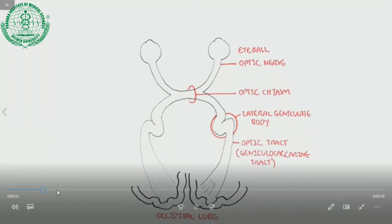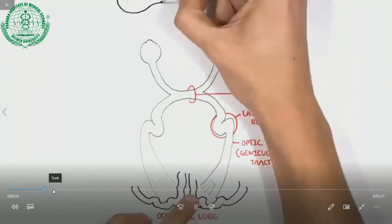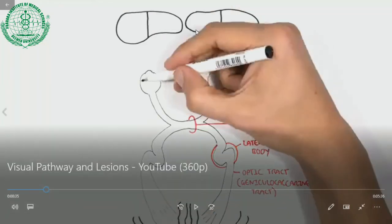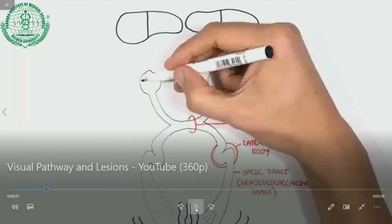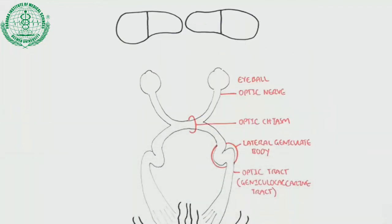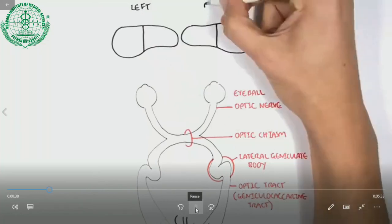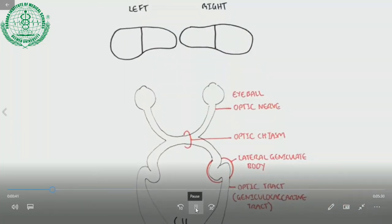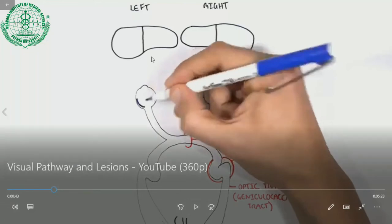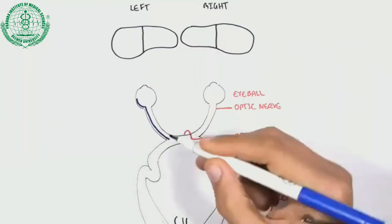Once you understand the left and right sides, the temporal and respective nasal fields, and the journey of rays carried from the eyeballs through the optic nerve, practice and revise these lesions at their respective sides of the pathway and the corresponding outcomes observed as visual field defects.